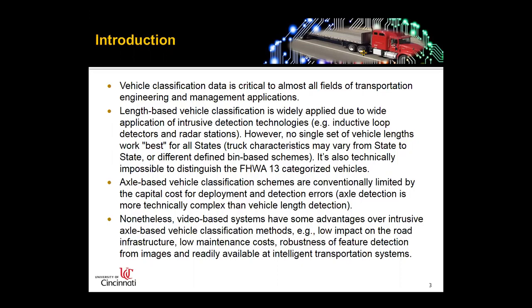Axle-based vehicle classification schemes are conventionally limited by the capital cost for deployment of video-based surveillance or detection systems. They also cause detection errors because of many environmental factors. From a technical standpoint, axle detection is more complex than vehicle length detection. Nonetheless, video-based systems have some advantages over intrusive axle-based vehicle classification methods — for example, low impact on road infrastructure, low maintenance cost, robustness of feature detection from images, and readily available in intelligent transportation systems. We can install cameras anytime, anywhere, which is why some states are becoming more interested in using video-based data.